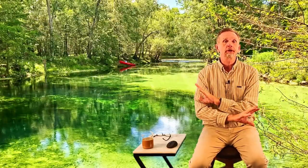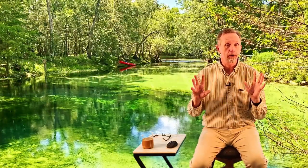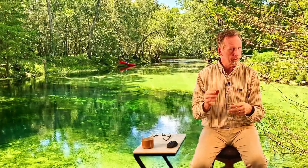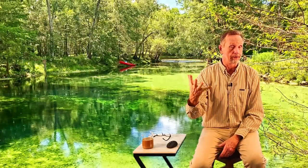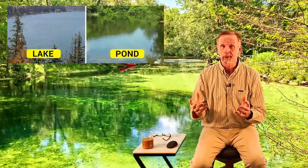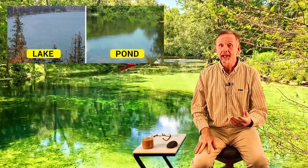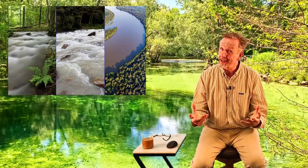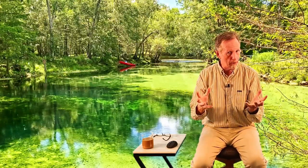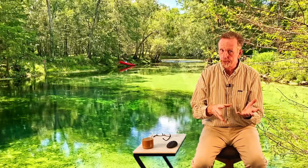Freshwater ecosystems are determined by the water's salinity — freshwater versus saltwater. Freshwater ecosystems include ponds, lakes, streams, rivers, and wetlands. Ponds and lakes are really the same thing; a lake is just bigger than a pond. Similarly, a stream is smaller than a river — there's no really classic definition. It's just small pond, large lake, small stream, large river.